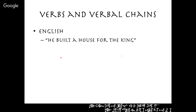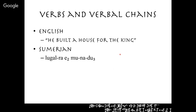In English we would say 'he built a house for the king.' In Sumerian: 'lugal' means king, 'e₂' means house, 'dù' means to build — the verbal chain means 'he built' — the object is 'house.' 'Ra' means 'to' or 'for' and they just attach it to the noun. So the sentence comes out: he built the house for the king. That's how the Sumerian sentence goes together.